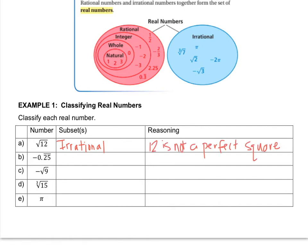The answer is irrational, and it's because 12 is not a perfect square. Okay, let's look at letter B, negative 0.25 repeating. Which category - natural, whole, integer, rational, or irrational - would negative 0.25 repeating be in? It is rational, and the reason is because we just learned in the last lesson that you can write it like a fraction, because it is a repeating decimal.